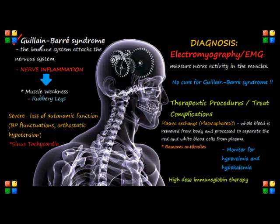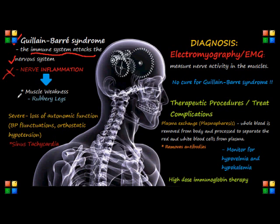What is Guillain-Barre syndrome? Basically, it's a disorder that occurs when the body's immune system mistakenly attacks part of our nervous system. This leads to nerve inflammation and in turn causes muscle weakness, which is a major symptom of this disease.